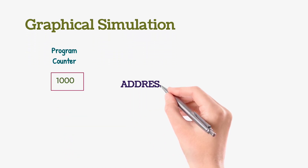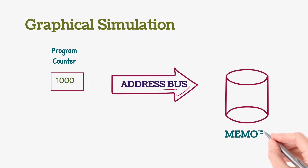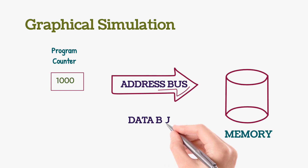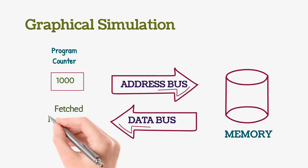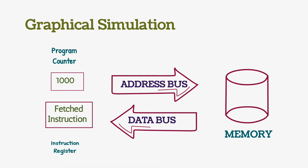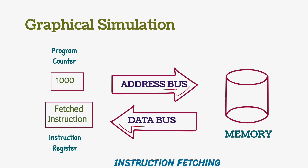Here we have a program counter which is storing the value 1000. The address is sent through the address bus to the memory, and through memory the specific instruction to be fetched is sent back through the data bus. This is all about the instruction fetching cycle.